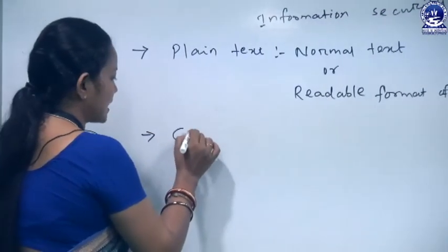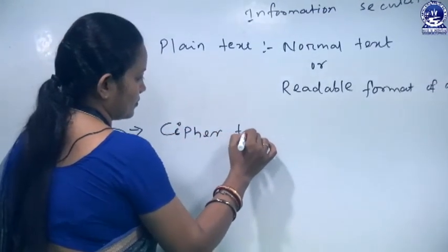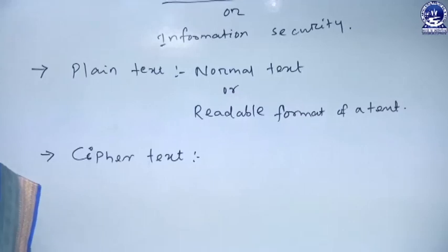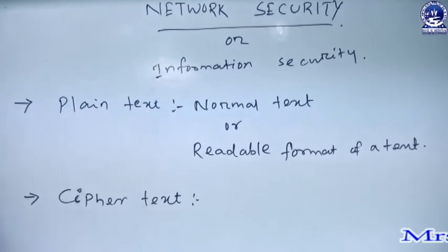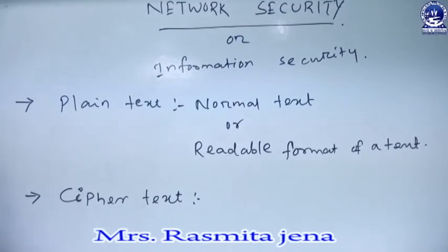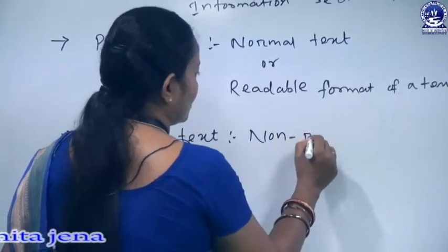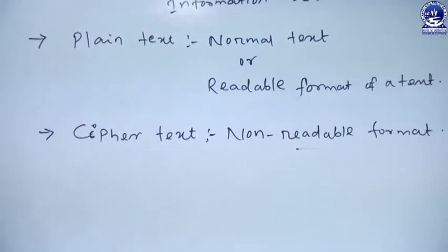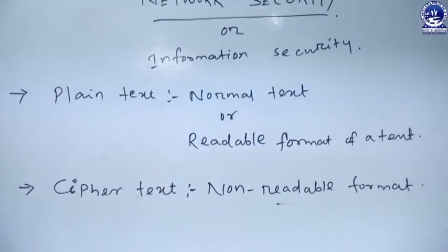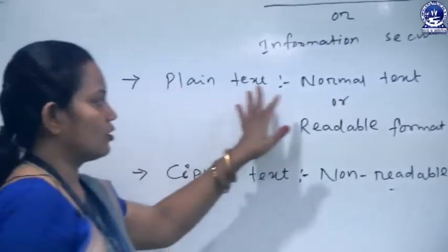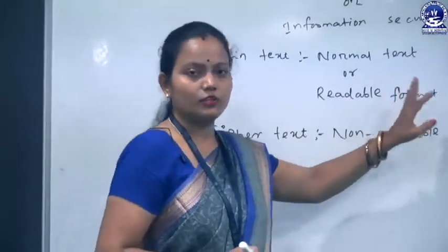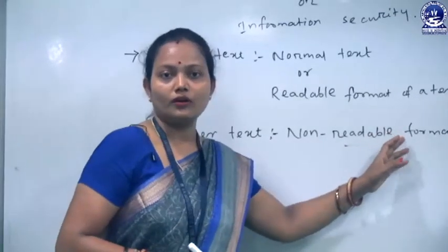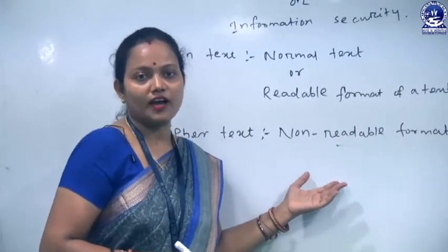The next concept is ciphertext. Ciphertext is quite opposite to plain text. That means ciphertext is in non-readable format — it is not easily recognized by the user. So plain text is a normal text easily readable by the user, while ciphertext is a non-readable format not easily recognized by the user.